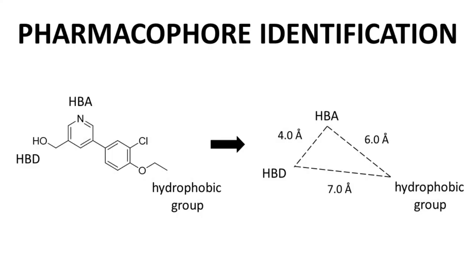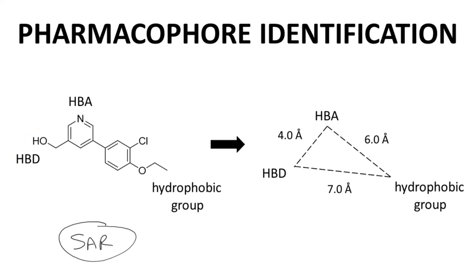With a set of active compounds, the structure of a molecule can often be reduced to its essential features for binding — the essential structure required for activity. This is again an example of SAR. On the left is a member of the hit series that has three key features: an H-bond donor in the alcohol, an H-bond acceptor in the pyridine nitrogen, and a hydrophobic or lipophilic group with the ethoxy group.